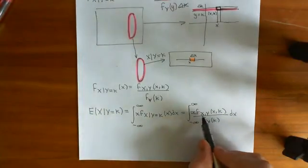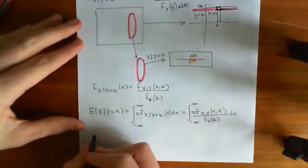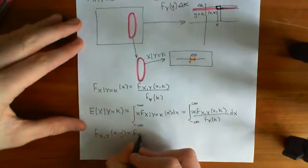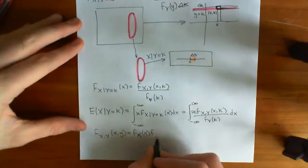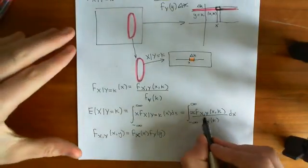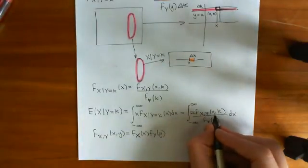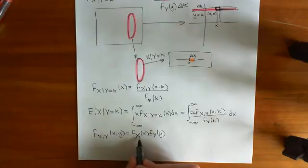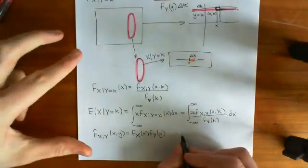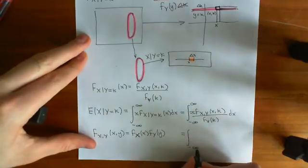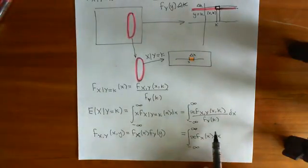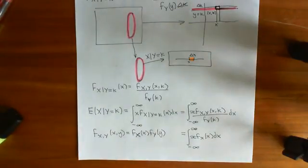Something interesting happens when the random variables X and Y are independent. By definition, the joint PDF equals the marginal PDF of X times the marginal PDF of Y. In that case, the joint PDF at (x, k) is replaced by the marginal of X at x times the marginal of Y at k, and the marginal of Y at k cancels with the denominator. What you get is simply the integral from negative infinity to infinity of x times the marginal PDF of X evaluated at x, dx — just the expected value of X from its marginal distribution.